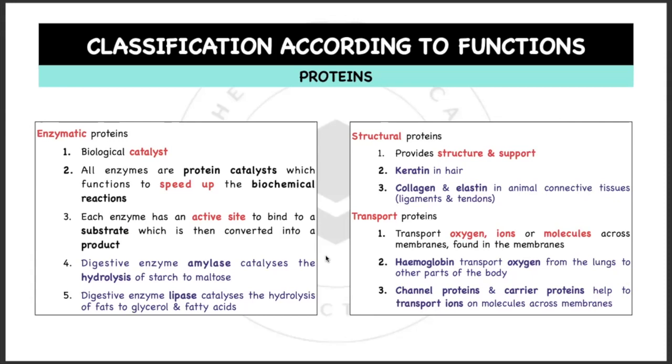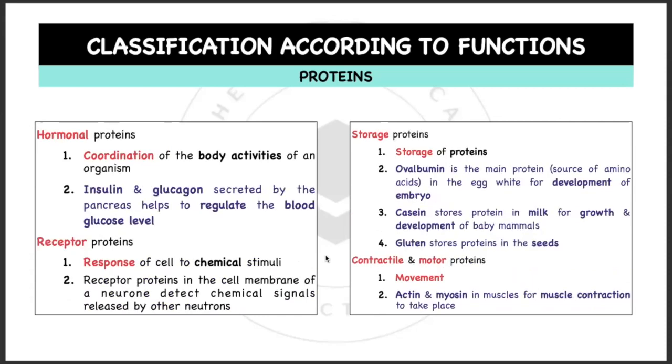Transport proteins transport oxygen, ions, or molecules across the membranes and they're found in membranes. Examples would be hemoglobin that transports oxygen from lungs to other parts of the body, and also the channel proteins and carrier proteins that help to transport ions or molecules across the membrane.